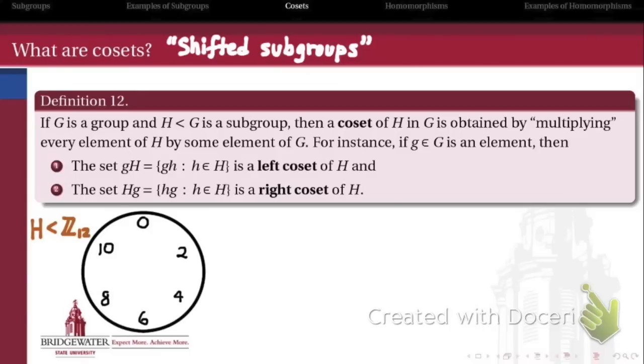So let's take the subgroup that we looked at in the last video. The subgroup consisting of the even integers modulo 12, 0, 2, 4, 6, 8, and 10. Call that H. So what does a coset of this subgroup look like? Well, suppose I take an element from G, let's say the number 1,